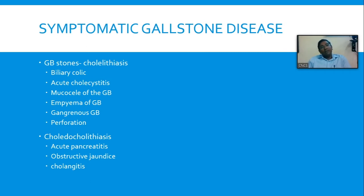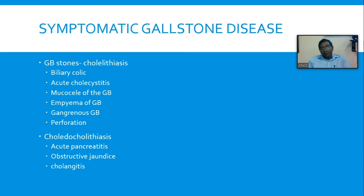The gallbladder is embryologically a midline structure, so this pain is felt in the epigastric region. Later it is situated in the right upper quadrant, but you may also feel gallbladder pain in the left upper quadrant because of its embryological origin. This crampy, dull, aching pain may radiate to the back — probably to the scapular region — but a common misnomer is that it radiates to the tip of the shoulder, which is an unlikely event.